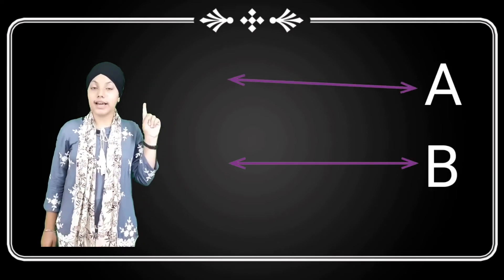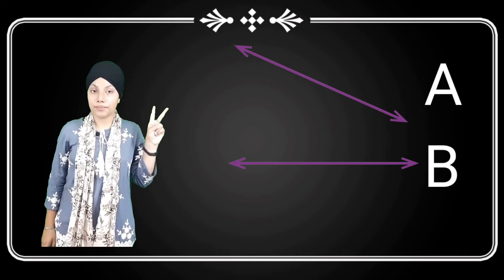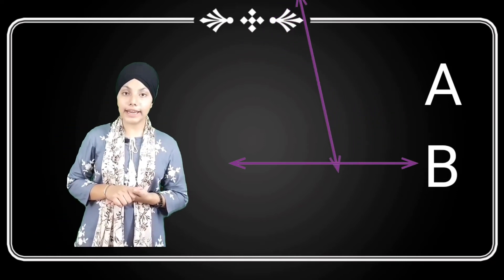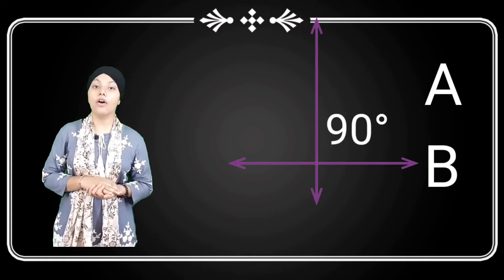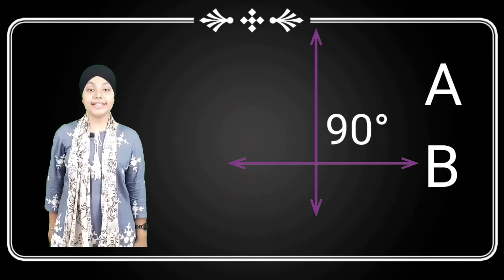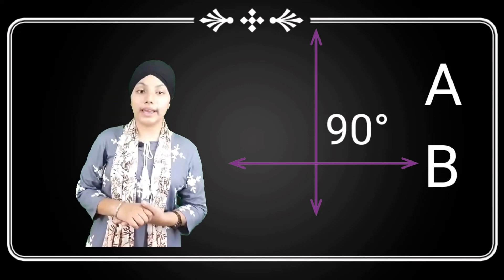Thereafter, we have perpendicular lines. See, we have two lines A and B. Line A makes an angle of 90 degrees at the plane of line B. So, line A is perpendicular to line B.